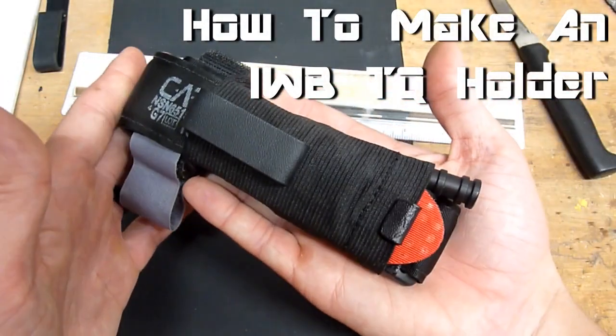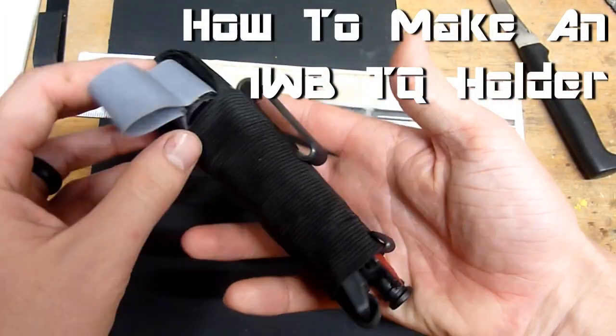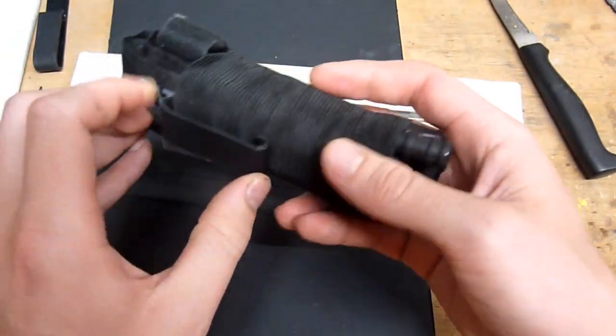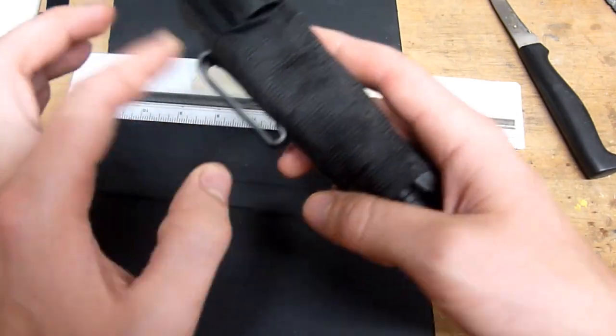Today we're going to be making one of these inside the waistband tourniquet carriers. All you need for this is some 4-inch elastic and some kydex. Use some of the thicker kydex. Don't go with the thin stuff since you are going to be making a clip with it.